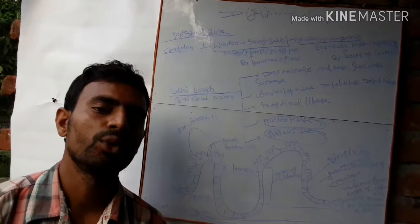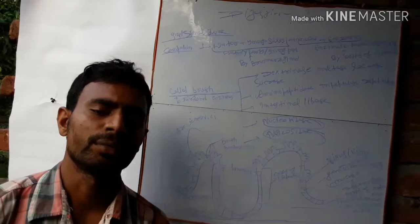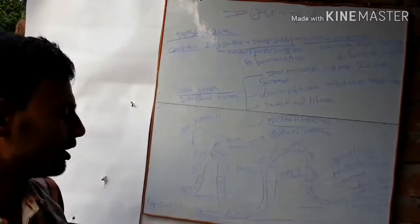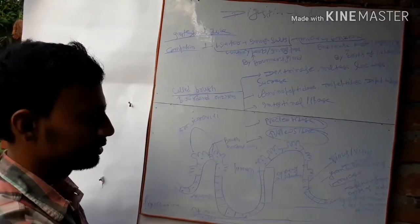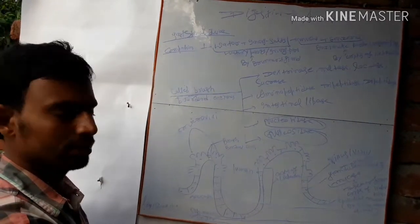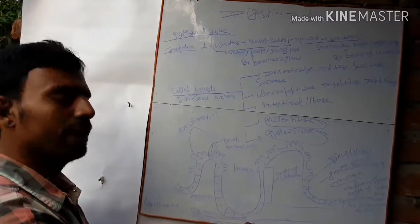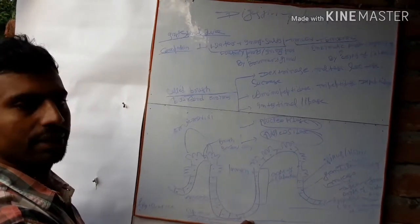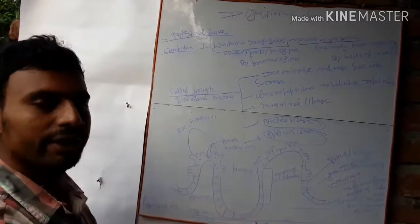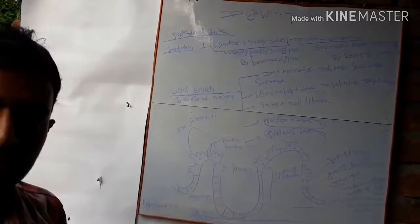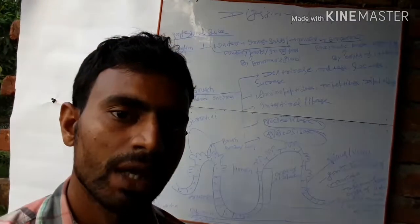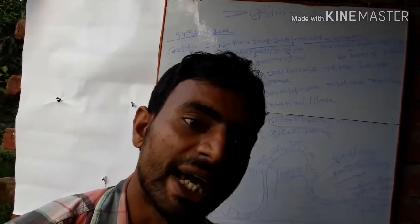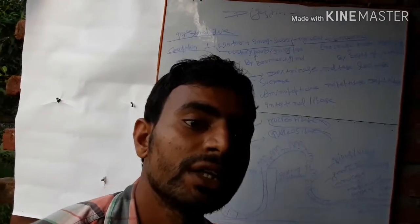In the small intestine, the following layers are present: first is the serous layer, then muscularis layer, sub-mucosal layer, and mucosal layer. Brunner's gland is present in the sub-mucosal layer.